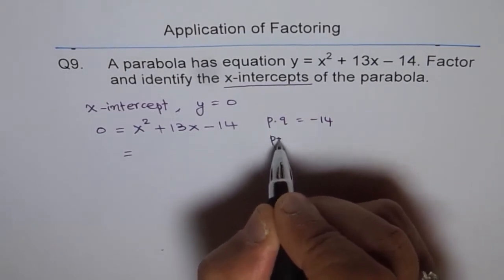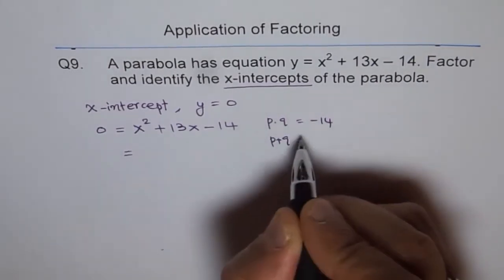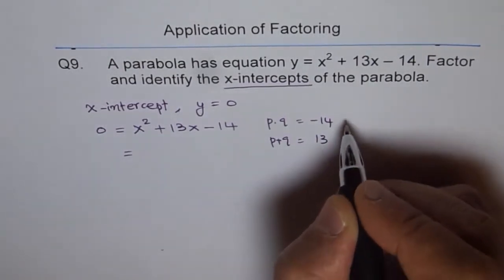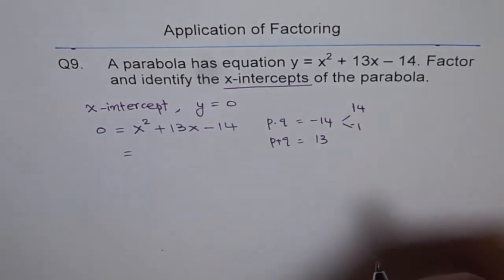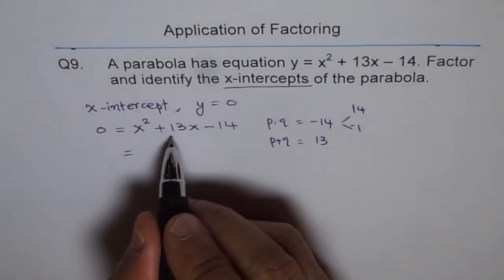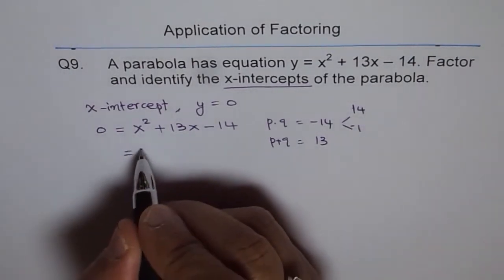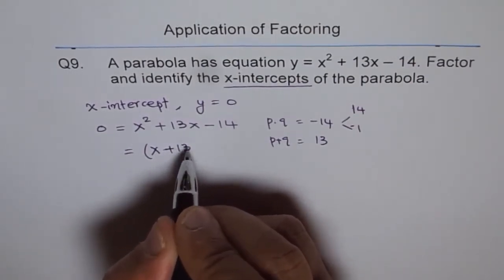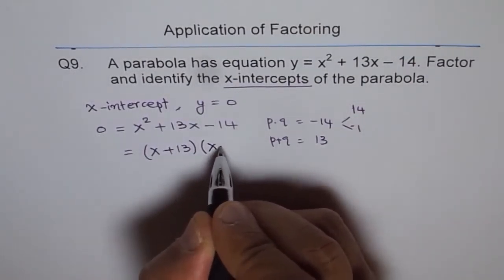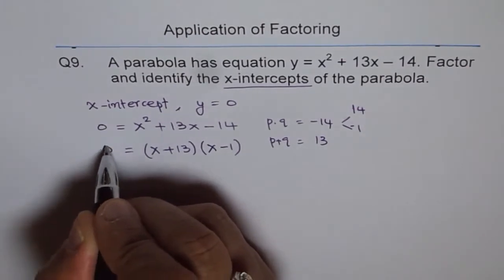And if you add them, you should get 13. Those two numbers are 14 and 1, where 14 is positive and 1 is negative, because you need positive 13. So you can factor this as (x + 13)(x - 1) = 0.